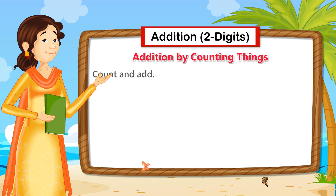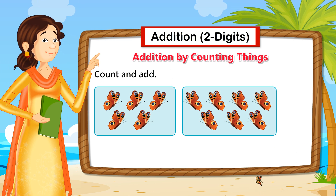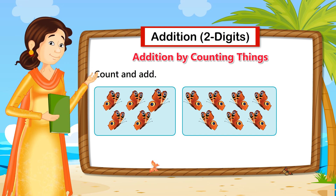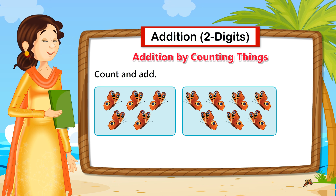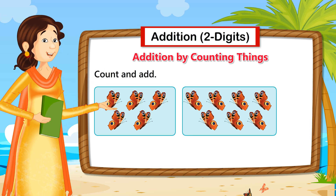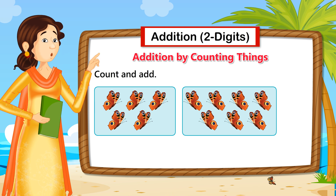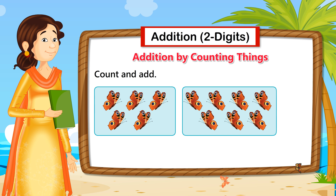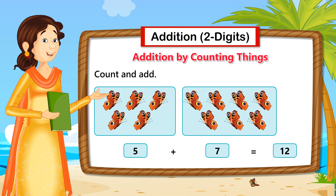Let's learn addition by counting. The number of butterflies in the first box is 1, 2, 3, 4, 5. The number of butterflies in the second box is 1, 2, 3, 4, 5, 6. 5 butterflies plus 7 butterflies equal 12 butterflies.